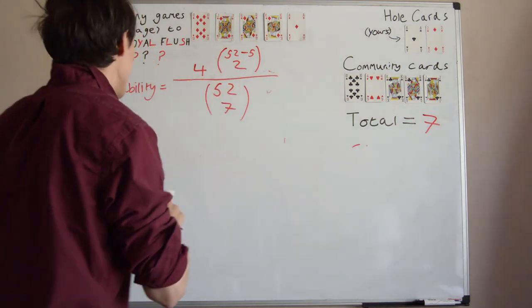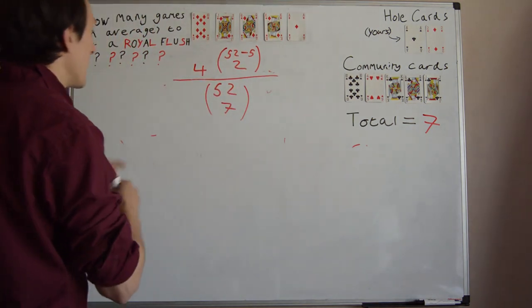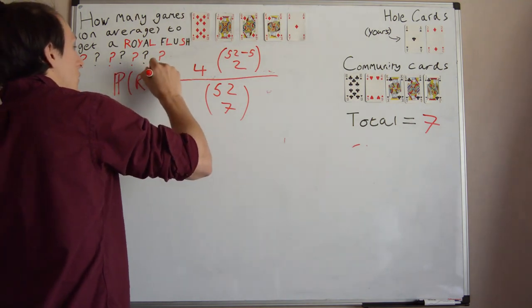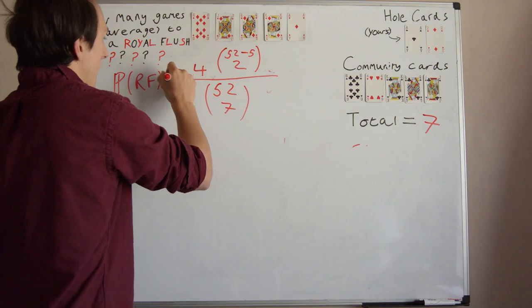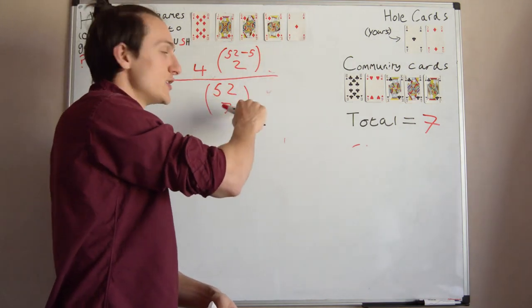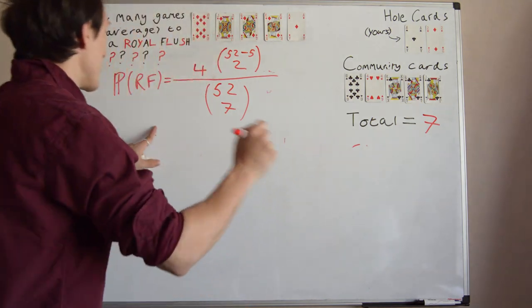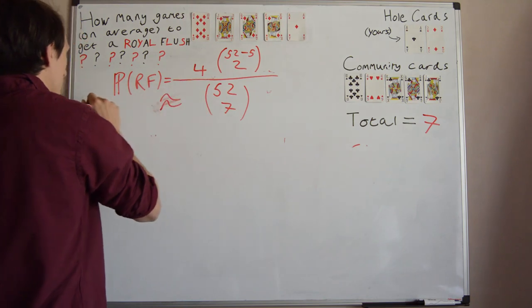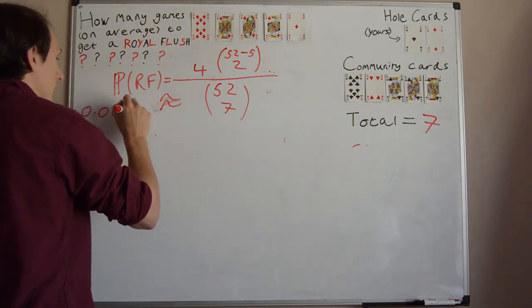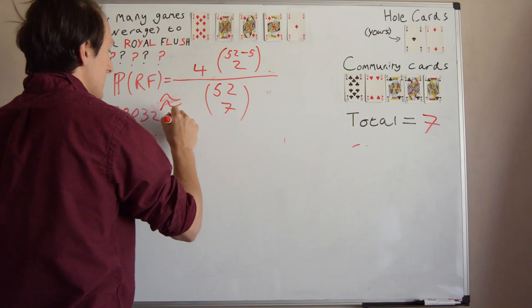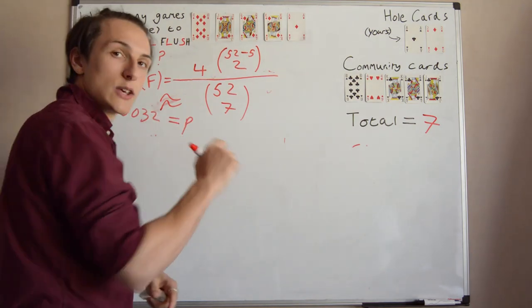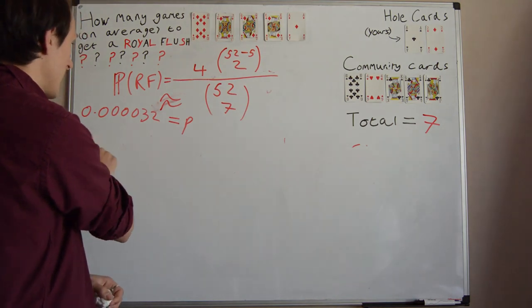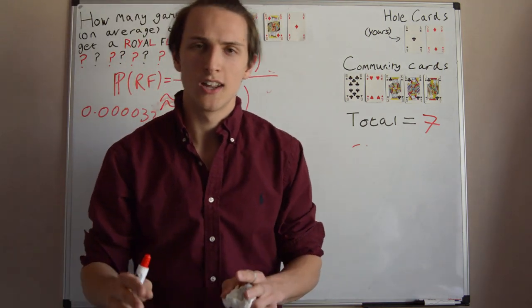So this is the probability of getting a Royal Flush, I'm just going to denote this as the probability of a Royal Flush. And don't worry if you don't know the specifics of what this notation means, it's not essential for the rest of the video. This turns out to be approximately 0.00000032, which I'm going to let equal p, because it'll be neat to write p. So that was easy, we've worked out the probability of a Royal Flush.